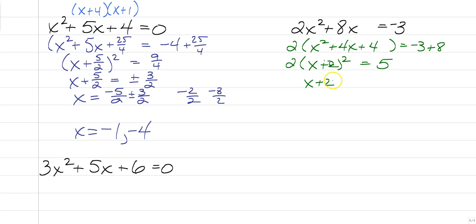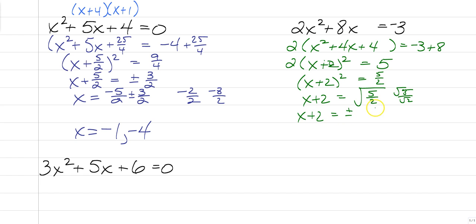Divide both sides by 2, and you have x plus 2 squared equals 5 halves. Now we have to square root both sides, and we get x plus 2 equals the square root of 5 halves. This is the square root of 5 over the square root of 2, and you can't leave a radical in the denominator. So you have to rationalize your denominator, giving you x plus 2 equals plus or minus square root of 10 over 2. Remember, no radicals in the denominator — if you forget how to divide by a radical, go back and watch a video on simplifying radicals. Then subtract 2 from both sides, and x equals negative 2 plus or minus root 10 over 2. That is why we need completing the square — because you could not factor that.